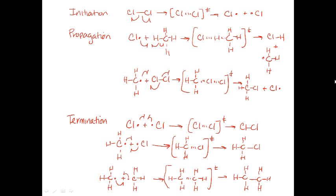In the last lecture for Monday, we went over the mechanism of free radical halogenation, which had six steps: an initiation step, two propagation steps, and three termination steps. We saw how to write the half arrows for the reactions — the movements of a single electron — how to write the transition states, and talked about the basics of the mechanism, the difference between intermediates and transition states, and how to write reaction coordinate diagrams.